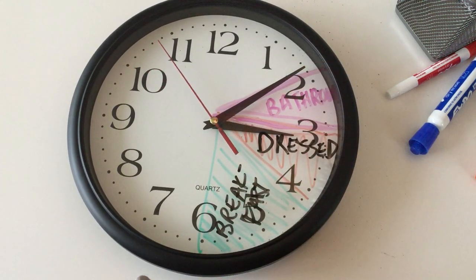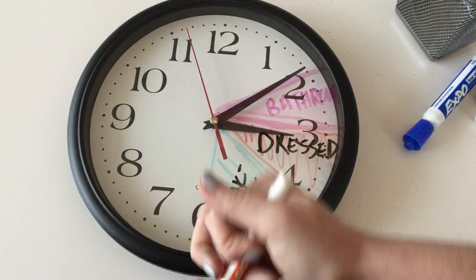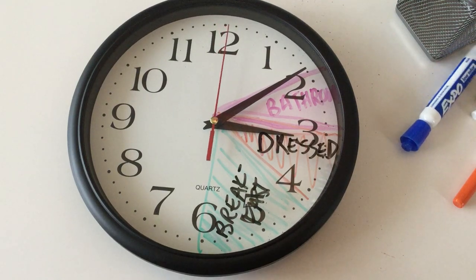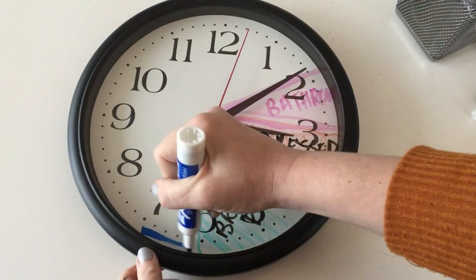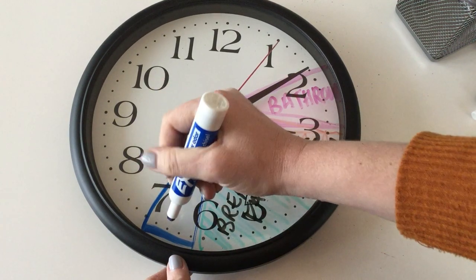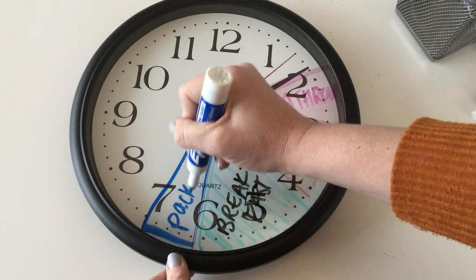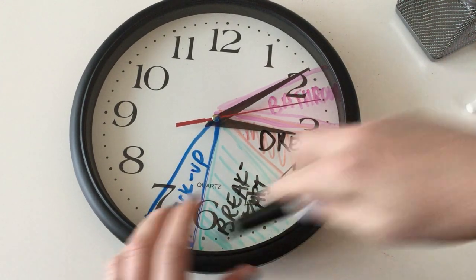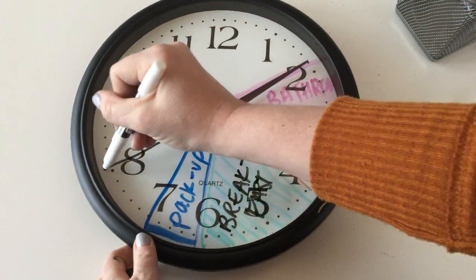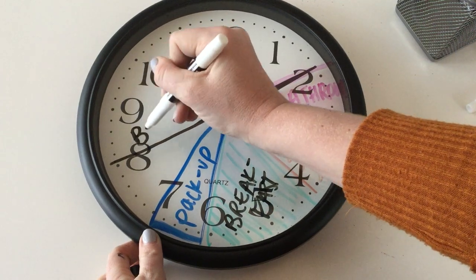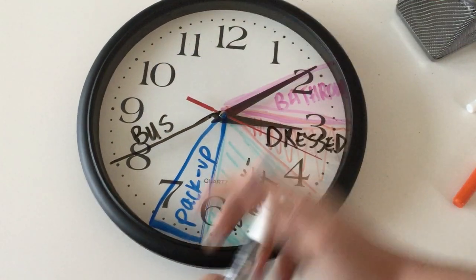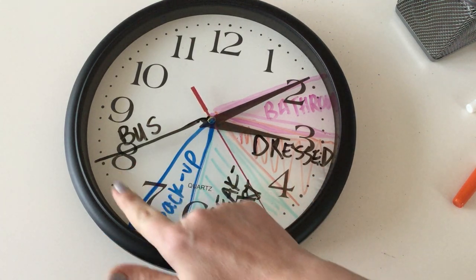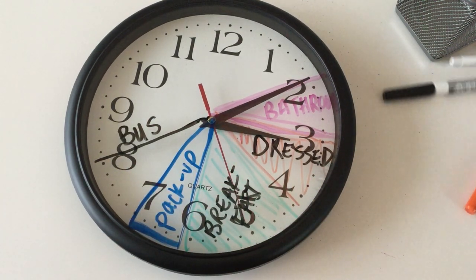Then let's schedule five minutes to pack up, because we've got to schedule that. I'm going to even give a five-minute buffer here because, you know, life happens. Then our last little section is just to note that the bus is coming at 40. So we have time for the bathroom, getting dressed, quick breakfast, pack up, and then kind of a five-minute leeway in case we're running late somewhere.